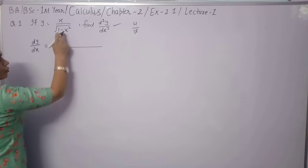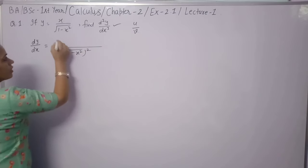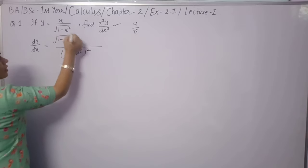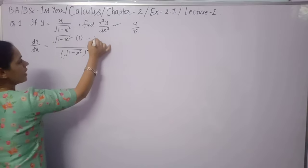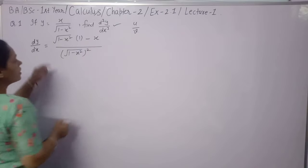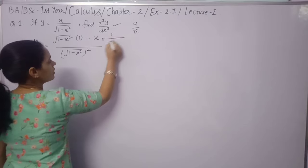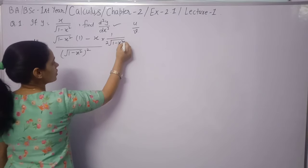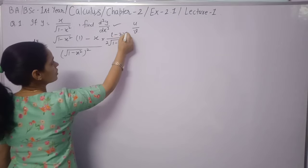Using the quotient rule, v² goes in the denominator. The derivative of x is 1, and √(1-x²) stays as it is. Then we differentiate √(1-x²): using the chain rule, we get (1/2)(1-x²)^(-1/2) times (-2x), so the result involves minus 2x over 2.